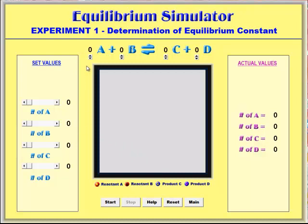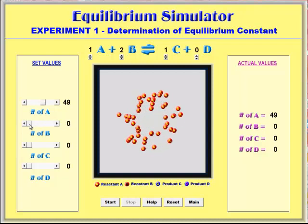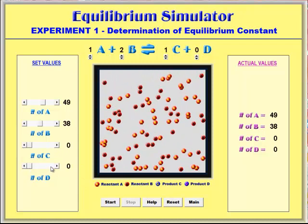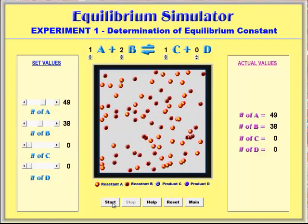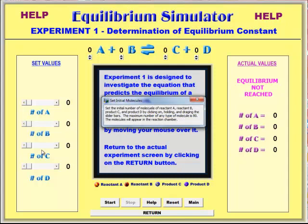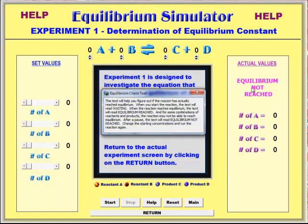All of the simulations are similar in the way they work. What is different is what information is provided and the inputs that are allowed. In this particular situation, we're trying to determine the equilibrium constant. We can decide what equation we want to investigate, change the number of reactant molecules, and add product molecules. There are help screens that will talk about each part of the simulation.